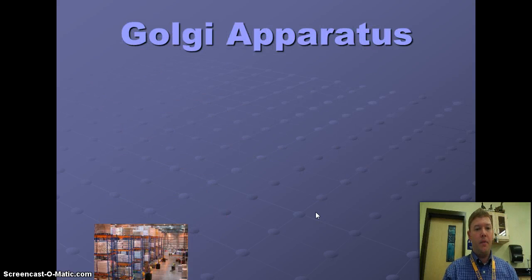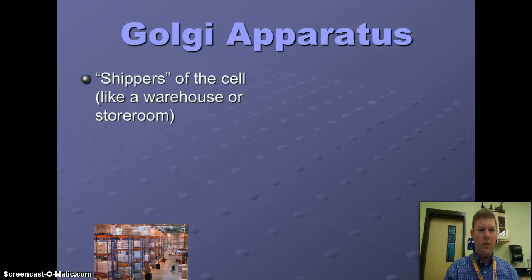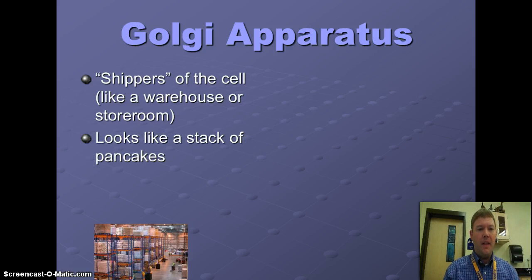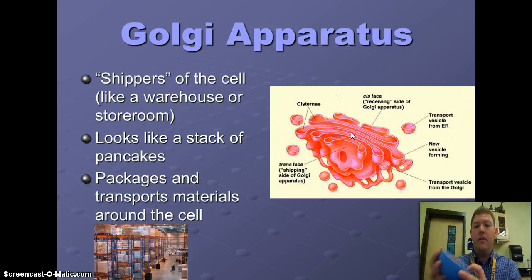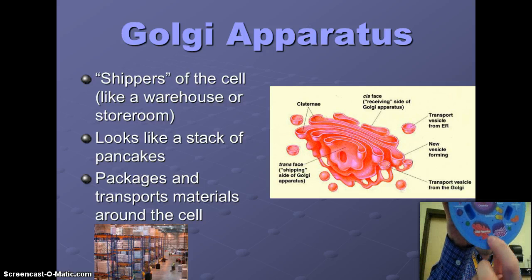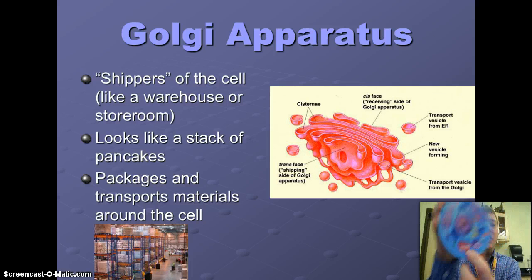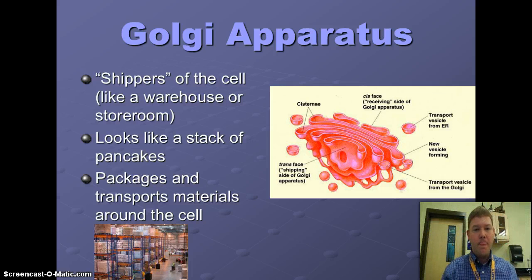What about the Golgi apparatus? The Golgi apparatus — these guys are the shippers of the cell. Think of them like a huge giant warehouse or store room. They look like a big stack of pancakes, and you can see the Golgi apparatus at the bottom of the animal cell here. Their whole purpose is to package and transport materials and move them throughout the cell.